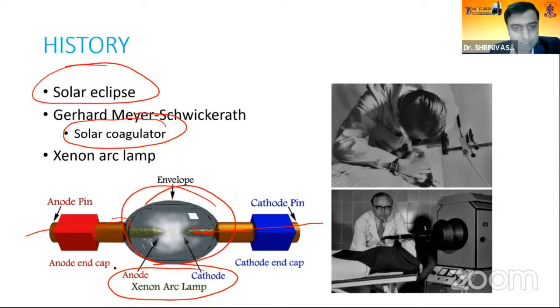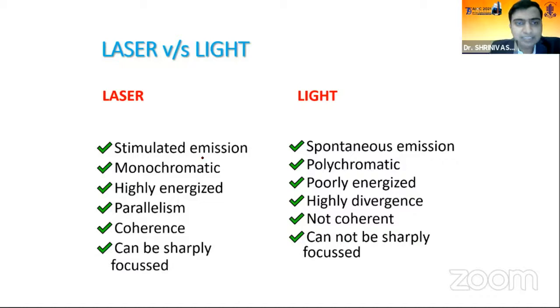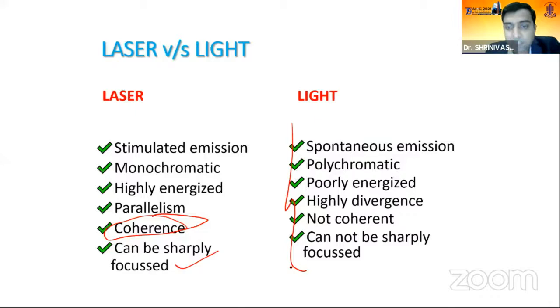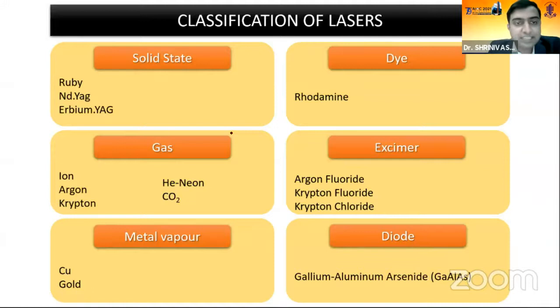When we compare laser versus light, the laser is a stimulated emission — monochromatic, coherent, and sharply focused. Whereas light is polychromatic and not coherent. The classification of lasers includes solid state lasers, gas lasers, metal vapor lasers, dye lasers like rhodamine, excimer lasers, and diode lasers.